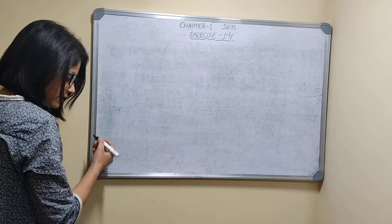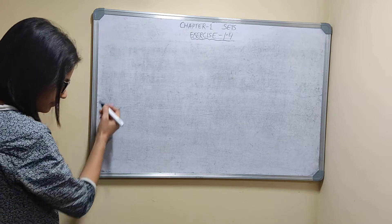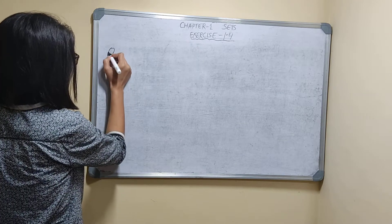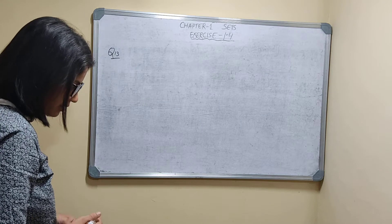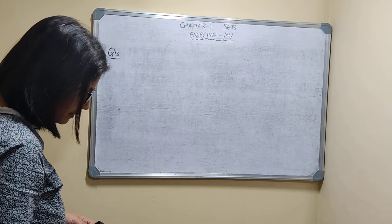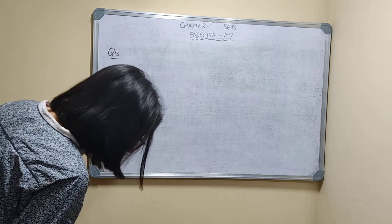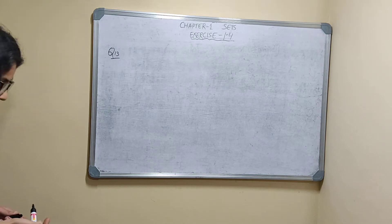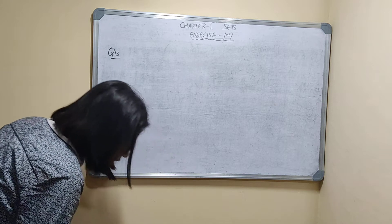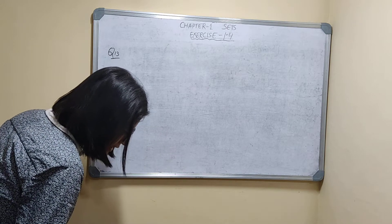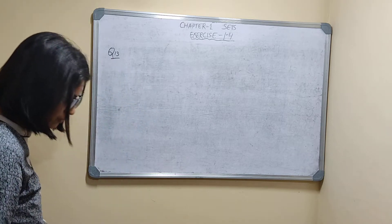Question number 13. In a group of people, 50 people read newspaper A, 20 read newspaper B, and 10 read both newspapers. How many people read at least one of the two newspapers?